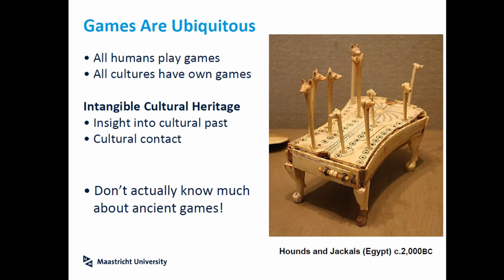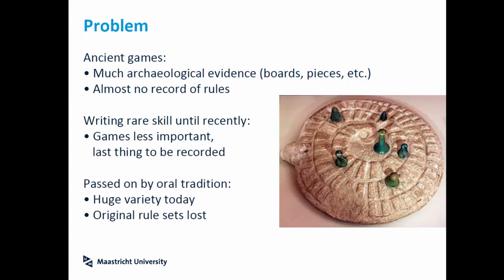Unfortunately, we don't know much about ancient games. Of course, we find a lot of archaeological evidence — some boards, some pieces. For example, you have Mehen, an ancient game from Egypt. It's played on a spiral board and uses different kinds of pieces, some smaller, some bigger. But we are not sure of the rules of that game, because we never find any record of the rules.